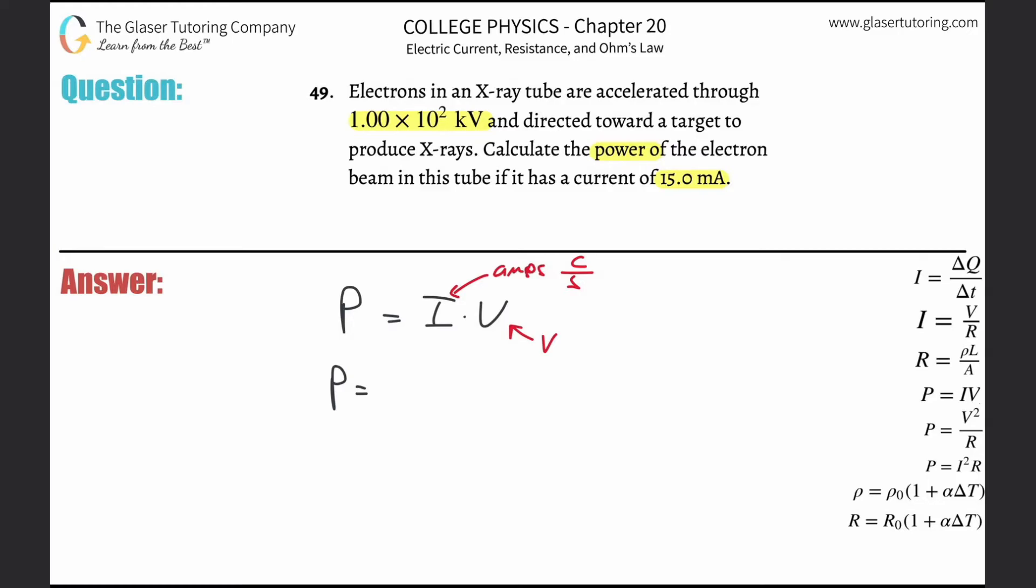So what they give me is milliamps. We're going to need to convert that to amps. To convert that to amps, it would simply be 15 divided by 1000. And then the voltage we're given in kilovolts, but we need that in volts. So we're going to take 1 times 10 to the 2 and multiply that by 1000 to get that into volts.